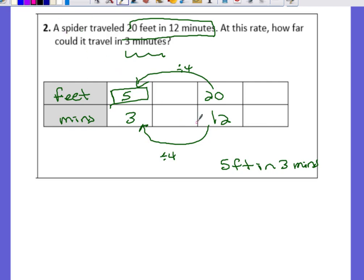So what I was saying earlier was that you could divide it by two, and it would give you 10 feet in six minutes. Divide it by two again, you would get three minutes and five feet. And this three minutes is what you're looking for, and it's the five feet. So again there's no one correct way of doing this.